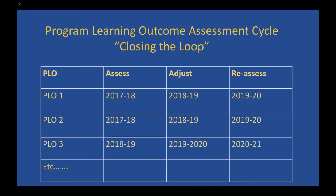There could be one, two, three, or more program learning outcomes being looked at every year. Ideally this is happening on a three-year cycle overall, so by the end of three years every program learning outcome has been at least assessed. There might be a staggered set of results over three years. We're also asking departments to build that plan — which PLOs are you going to look at each year, with the idea that there's a three-year cycle?